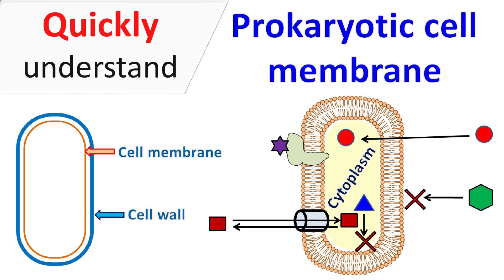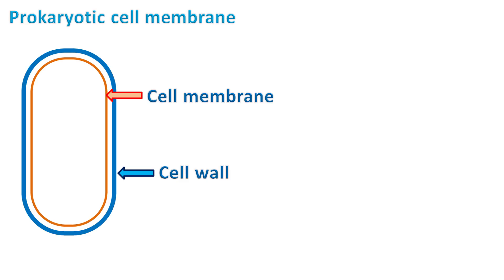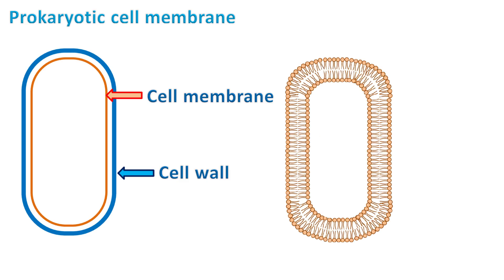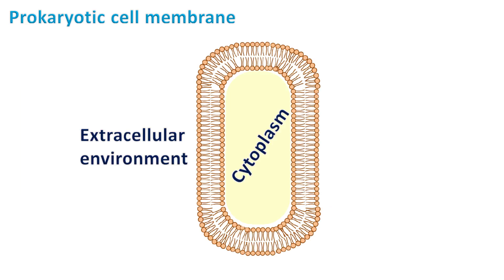Hey guys, welcome back with Mr. Basics. Let's talk about the prokaryotic cell membrane. The cell membrane separates the cytoplasm from the external environment. It is connected with the external environment and plays a very important role in the interaction of the cell with the outside environment.